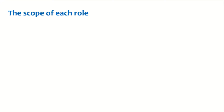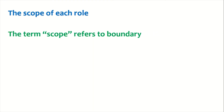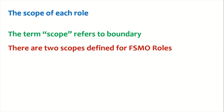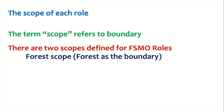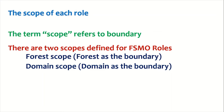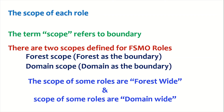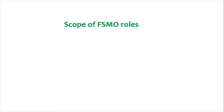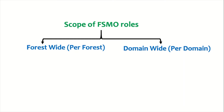Let us see the scope of each and every role. The term scope refers to the boundary of a particular role. There are two scopes defined in the world of FSMO: one is forest scope, also called forest-wide, where the boundary is the Active Directory forest; and another is domain scope, where the boundary is the domain, so every domain will have that particular role.